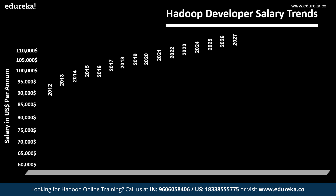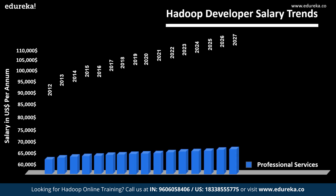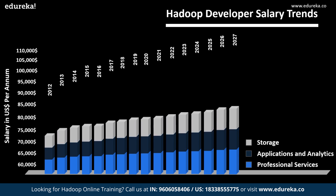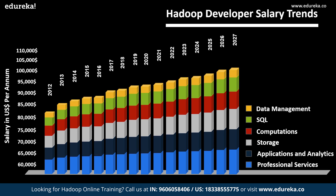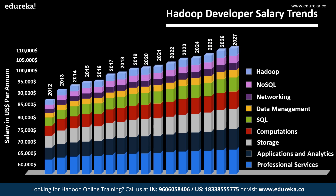Let's check out the rise in salary trends for Hadoop developers compared to other profiles — including IT service providers, application and analytics engineers, storage management engineers, computation specialists, SQL developers, NoSQL developers, data management engineers, and network engineers. Hadoop developers are on top with the highest salary in 2020, around $100,000 to $105,000 for an entry-level engineer, potentially growing to $110,000 or more in upcoming years.